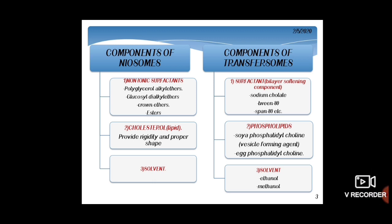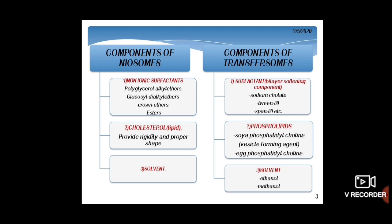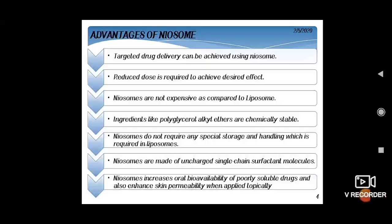Components of Transferosomes include surfactant, phospholipid, and solvent. Surfactants are bilayer softening compounds that provide flexibility, including Tween 80, Span 80, and sodium cholate. Phospholipids are used as lipid-forming components, and solvents include ethanol and methanol. Transferosomes can overcome skin penetration difficulty by squeezing along the intercellular sealing lipids of the stratum corneum through two possible mechanisms: acting as a drug vector remaining intact after entering the skin, or acting as a penetration enhancer by disrupting the organized intracellular lipids of the stratum corneum.